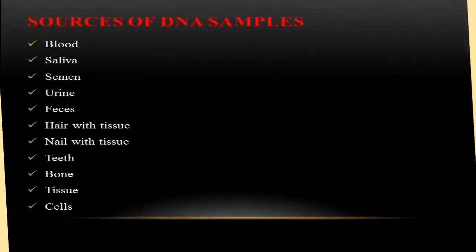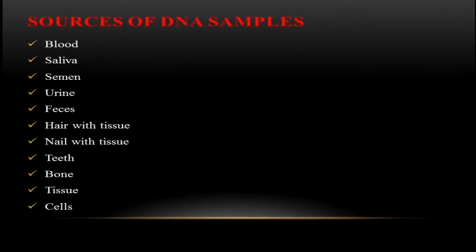These are the biological sources from which DNA samples are collected by law enforcement agencies, especially forensic experts. Samples collected are later examined in a forensic or DNA lab and compared with the suspect's DNA sample. The biological sources include: blood, saliva, semen, urine, feces, hair with tissue, nails with tissue, teeth, bone, tissues, and cells.